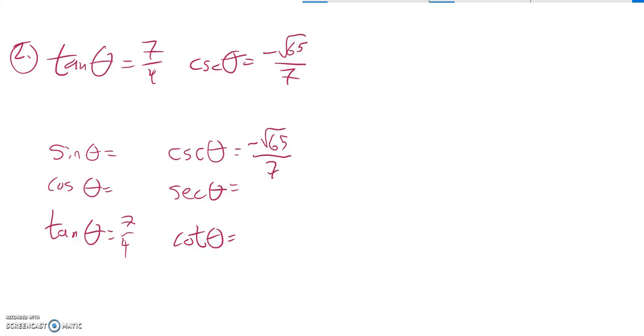A couple things we can just know right away. If tangent is 7 fourths, cotangent is 4 sevenths. And if cosecant is negative root 65 over 7, sine then must be negative 7 root 65 over 65. Flip that and rationalize the denominator.